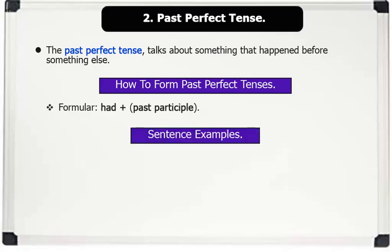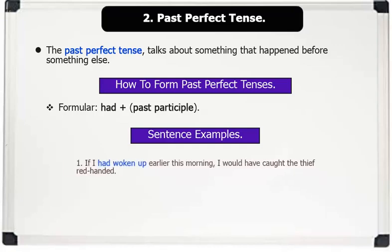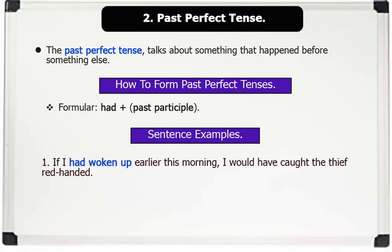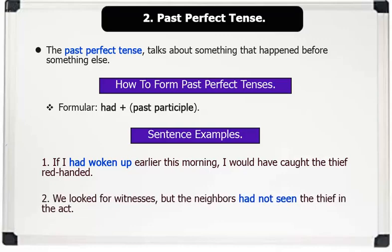Sentence examples. 1. If I had woken up earlier this morning, I would have caught the thief right-handed. 2. We looked for witnesses, but the neighbors had not seen the thief in the act.